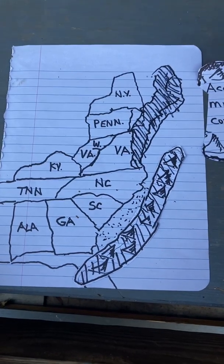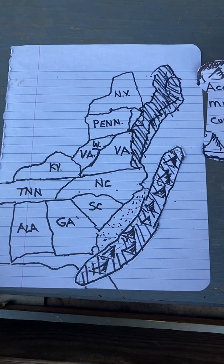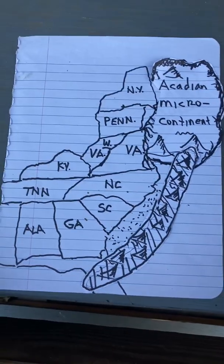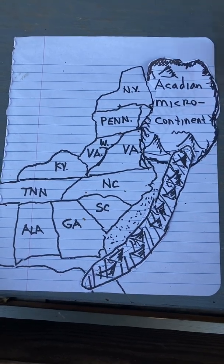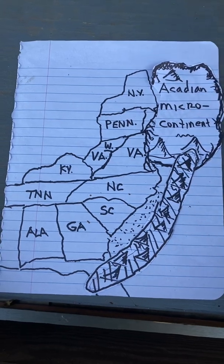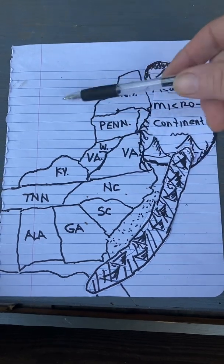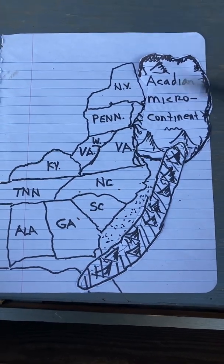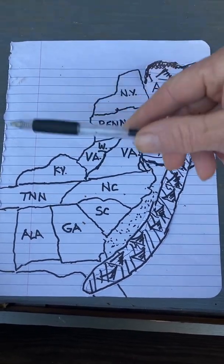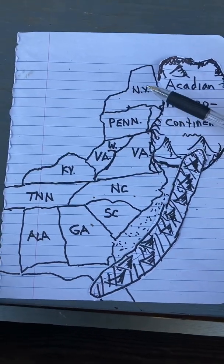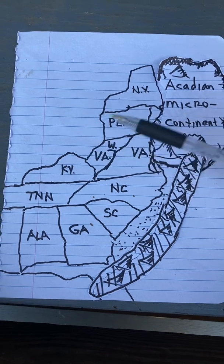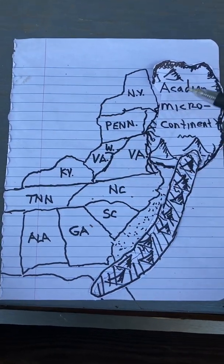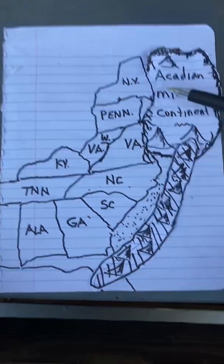During the Devonian period, roughly 400 to 350 million years ago, the Acadian Orogeny occurred. The Acadian microcontinent smashed into the northern coast of North America and was added to that real estate. These mountains eroded enormous amounts of sediment into the foreland basin — far more than the Taconic island arc had. Those sediments are called the Catskill Delta, found today in New York, Pennsylvania, West Virginia, and possibly into Kentucky and Virginia. Acadia did not crash down south, which is why there are no Catskill Delta sediments there.